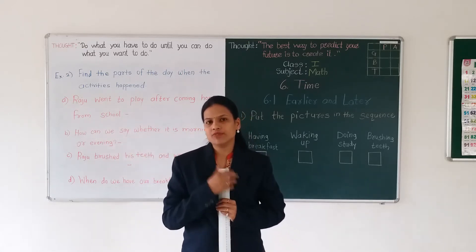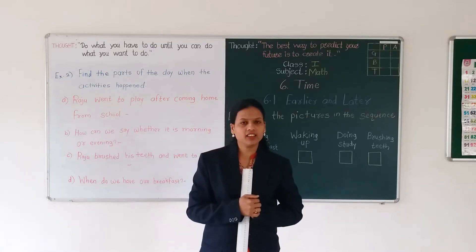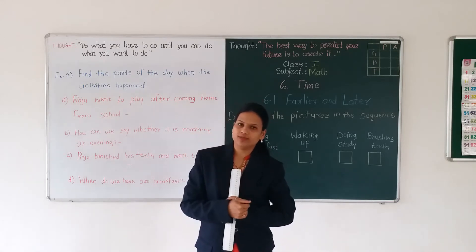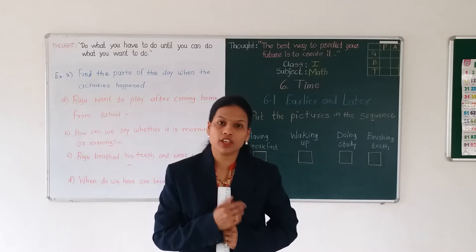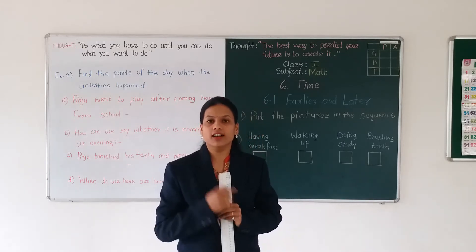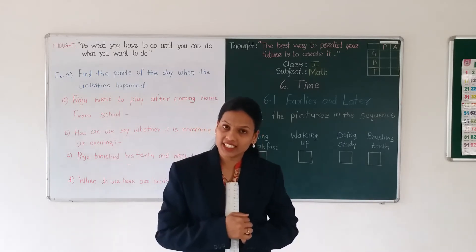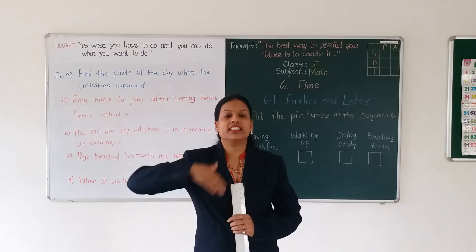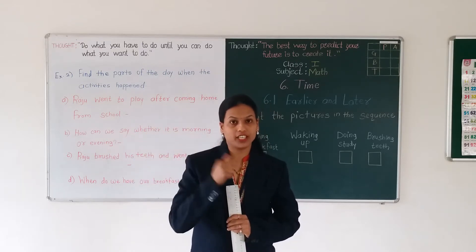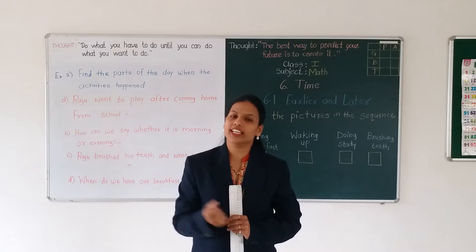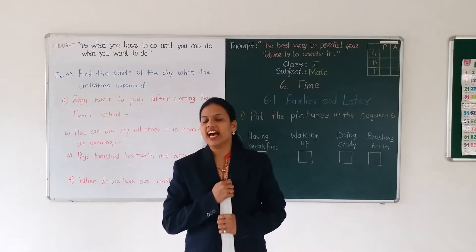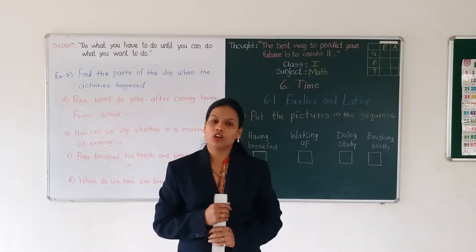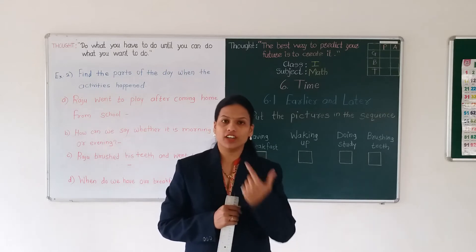Shall we take one example? Taking a breath, brushing your teeth, and taking a bath - suppose these activities are there. Which activity are we doing earlier and which activity are we doing later? Brushing our teeth is the activity we are doing earlier, and taking a bath is the activity we are doing later. After brushing teeth, we are taking a bath. So these are the kinds of examples we have taken for showing the meaning of earlier and later.